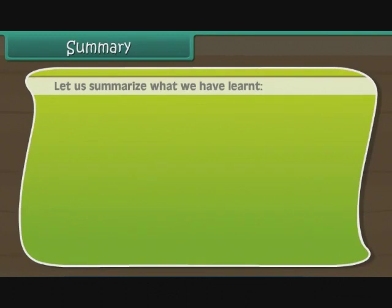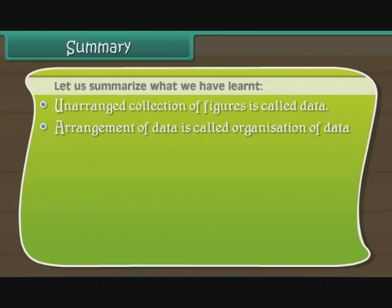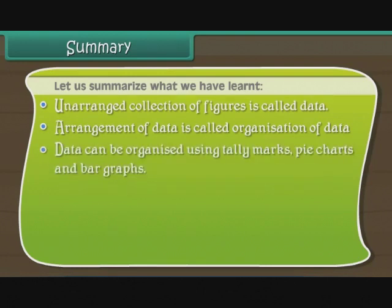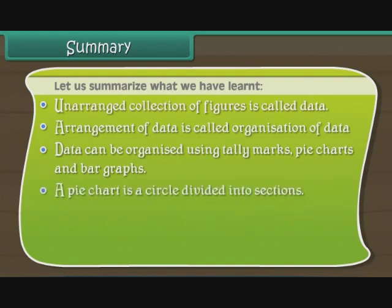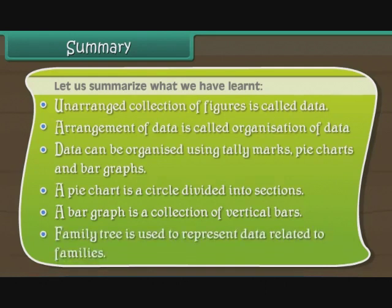Let us summarize what we have learned. Unarranged collection of figures is called data. Arrangement of data is called organization of data. Data can be organized using tally marks, pie charts, and bar graphs. A pie chart is a circle divided into sections. A bar graph is a collection of vertical bars. A family tree is used to represent data related to families.